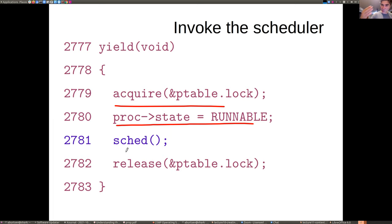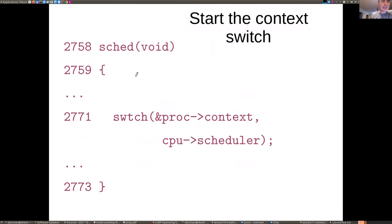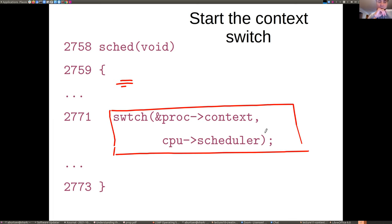Looking at the timer interrupt: there's a switch statement inside the trap function. If it's a timer, you acquire the tick lock, increment the tick variable, wake up processes waiting for the next tick. Then if the current process state is 'running' and the interrupt is a timer interrupt, you call yield. Inside yield, you acquire the ptable lock, set the state of this process to 'runnable' — it's no longer running but is ready to run — and then enter the sched function, which drops into the low-level assembly switch function.